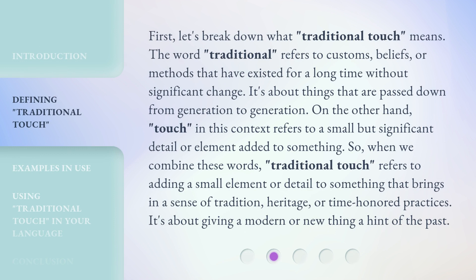First, let's break down what 'traditional touch' means. The word 'traditional' refers to customs, beliefs, or methods that have existed for a long time without significant change — things that are passed down from generation to generation. On the other hand, 'touch,' in this context, refers to a small but significant detail or element added to something.